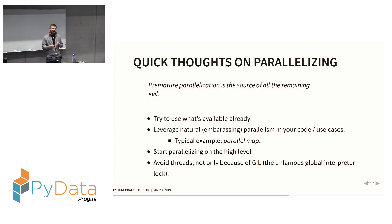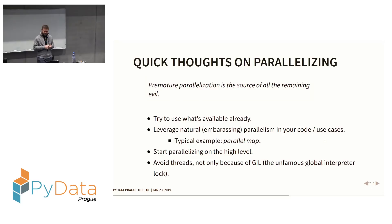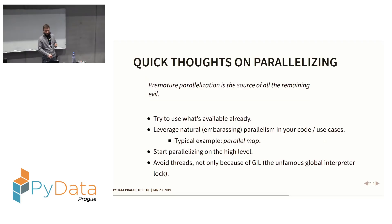Parallelization comes along with optimization as a way to make your code run faster. My advice is to try to use what's available and stay at a high level. Typically you want to run something like a map over a number of inputs, so you can parallelize at that level without parallelizing the internals. Avoid threads unless you know what you're doing, also because of the infamous GIL — which actually helps you avoid terrible mistakes.